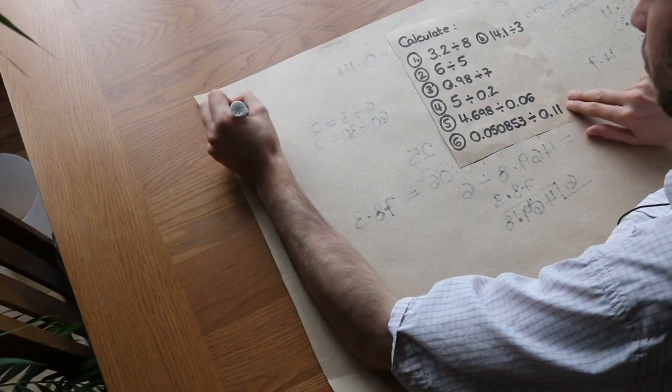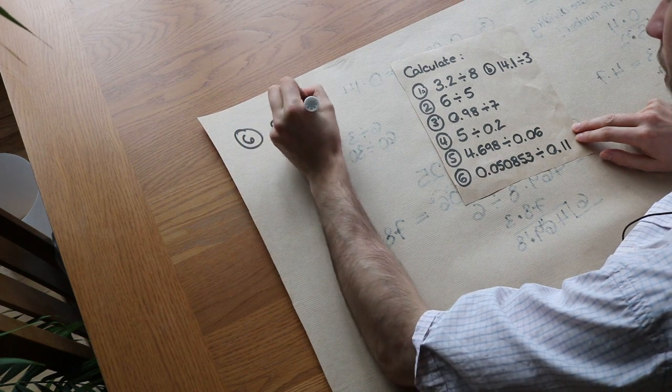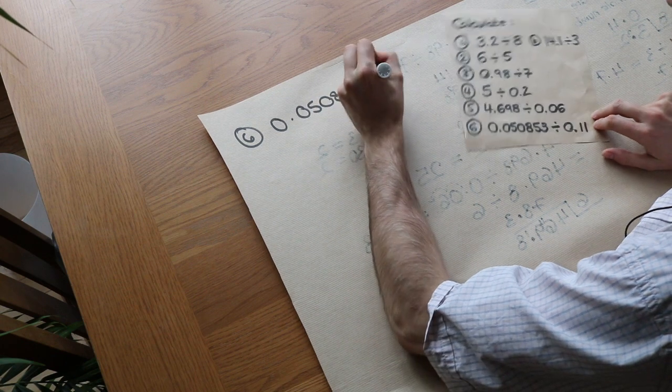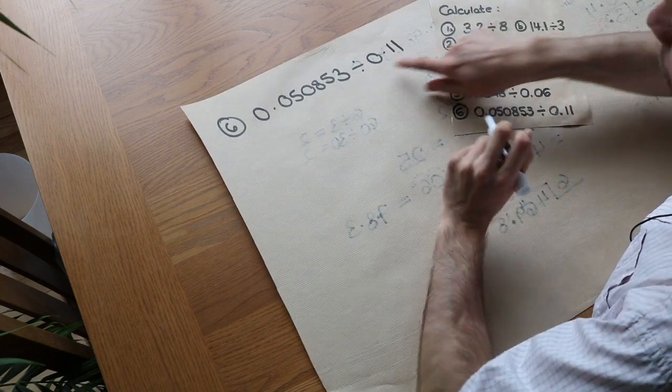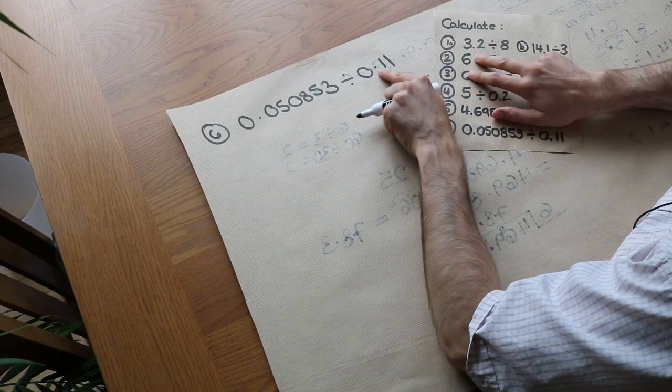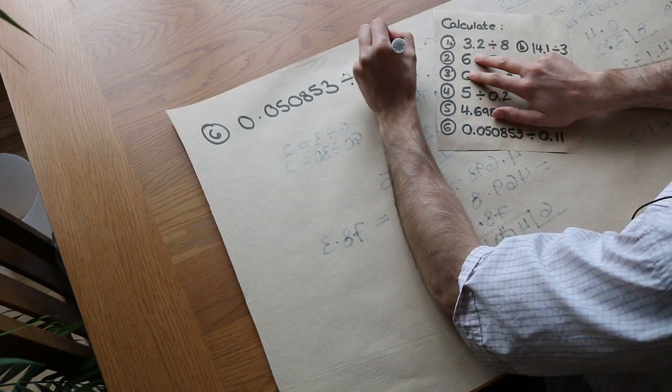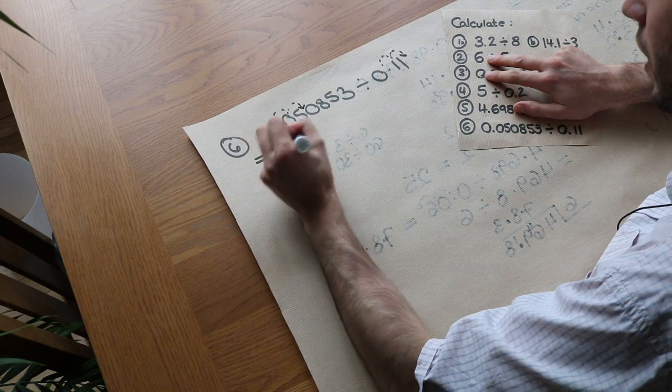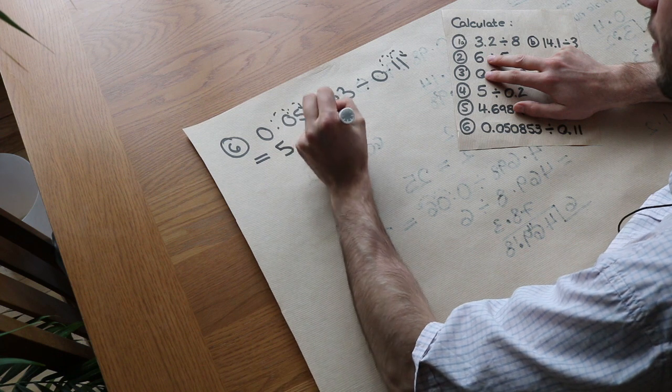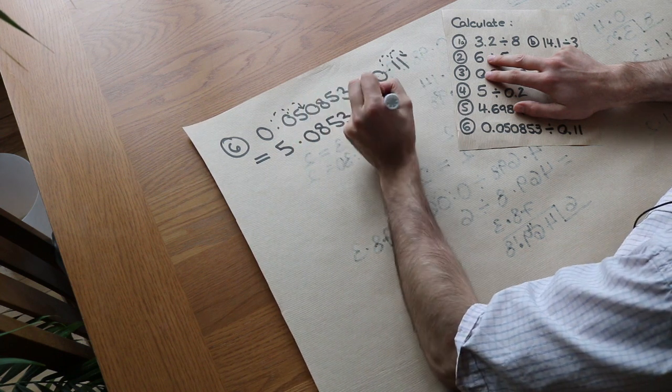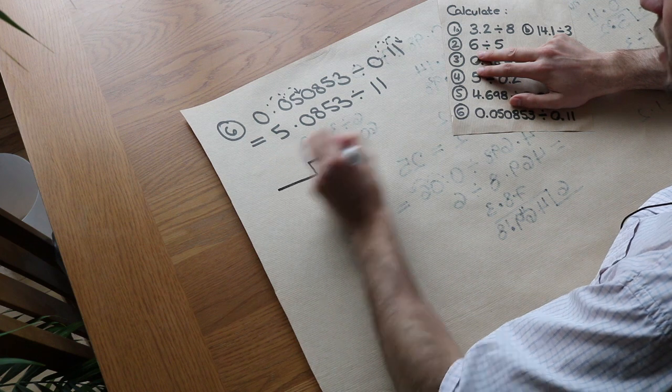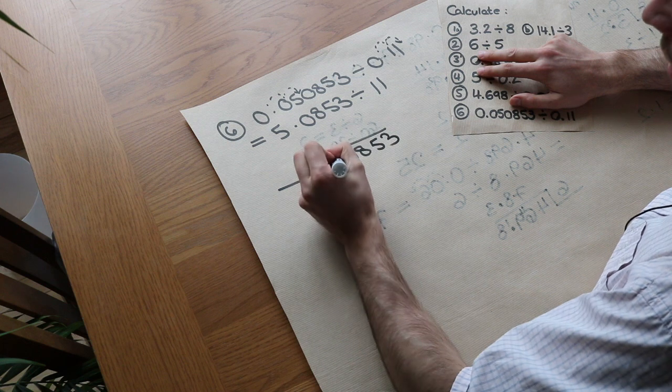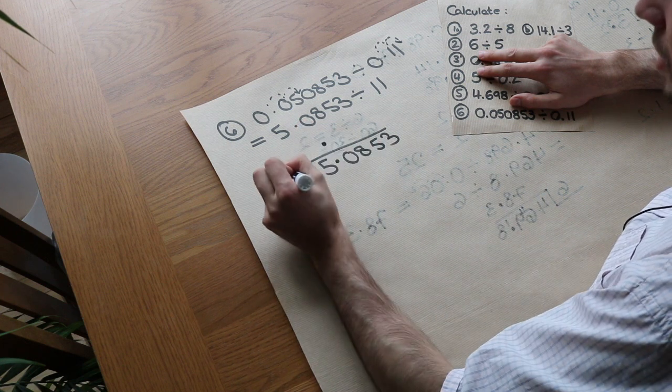And then finally, this one. We've got 0.050853 divided by 0.11. Now we need to divide by a whole number. So what do we need to multiply this by? Well multiplying by 100 again will do. So we multiply both these by 100. That becomes 5.0853 divided by, well, that becomes 11. And now we're dividing by a whole number, so we can do exactly the same thing. So we've got 5.0853. Put the decimal point up here in the same place, and we divide by 11.